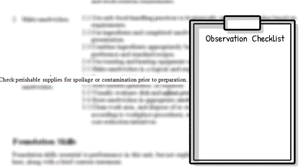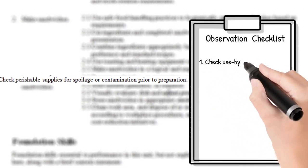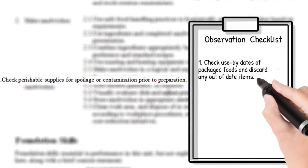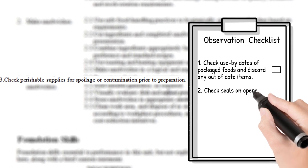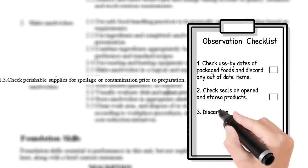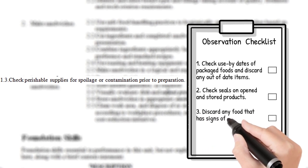These might be: 1. Check use by dates of packaged foods and discard any out of date items. 2. Check seals on opened and stored products. 3. Discard any food that has signs of spoilage.